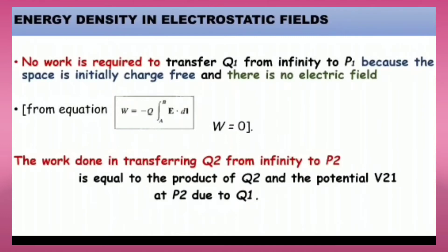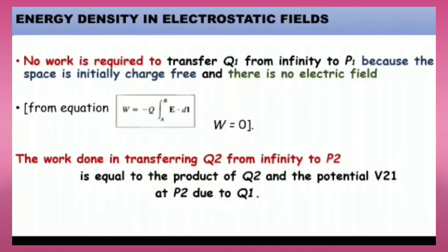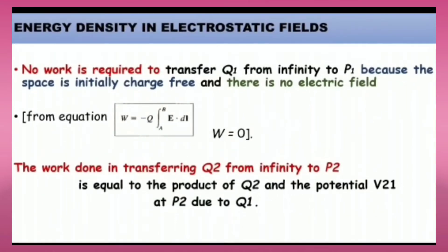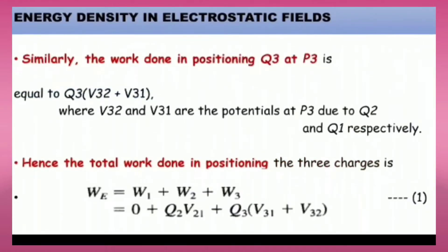The work done in transferring q2 from infinity to point p2 — now it is not an empty space, as charge q1 is already present. So the work done in transferring q2 is equal to the product of q2 and the potential V21 at point p2 due to q1. Similarly, the work done in positioning q3 equals q3 times (V32 + V31), where V32 and V31 are the potentials at p3 due to q2 and q1 respectively.